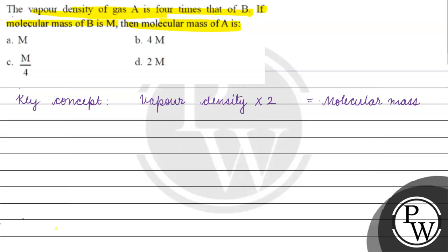Now in this question, we're given that vapor density of A is four times that of B. We can write: vapor density of A equals four times vapor density of B.